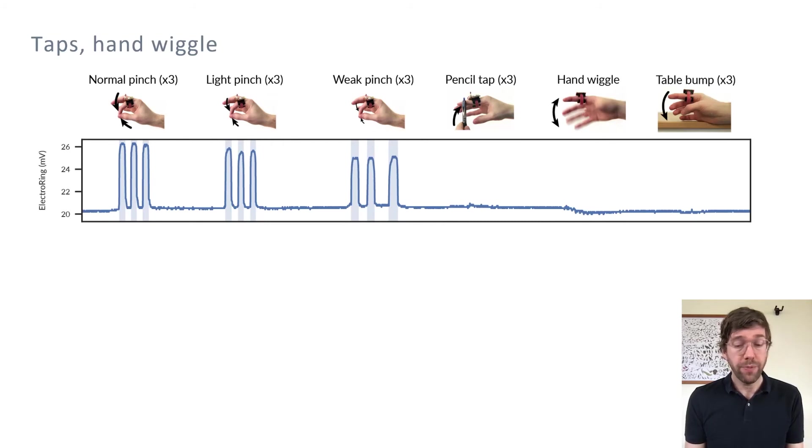At the same time, the user can perform much more vigorous actions that are not touched, such as tap the finger with a pencil, or wiggle the hand, or bump it on a table. The touch sensor remains quiet during these actions.